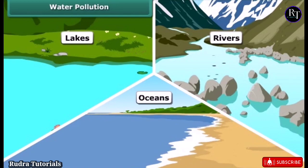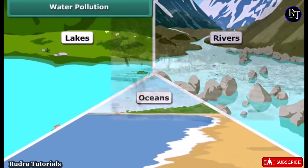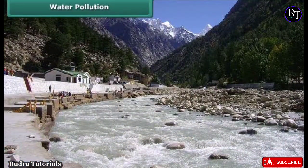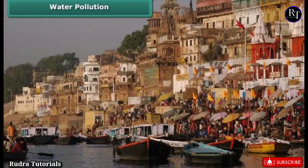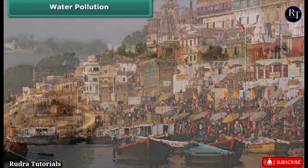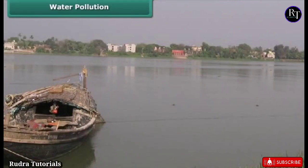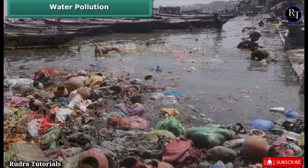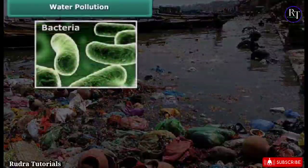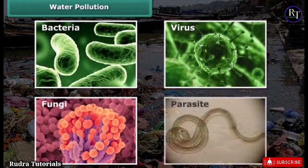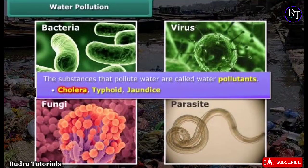However, look at what we are doing to these resources. Let us take the example of River Ganga. Millions of people depend on it for their daily needs and livelihood. Recently, the Worldwide Fund for Nature (WWF) found that Ganga is one of the 10 most polluted rivers in the world. The polluted water of these resources may contain bacteria, viruses, fungi and parasites which cause diseases like cholera, typhoid and jaundice.